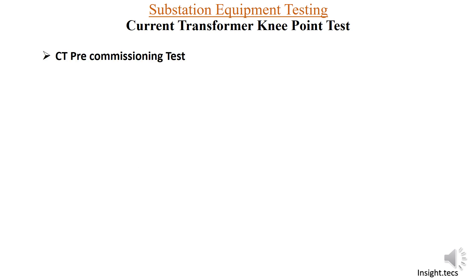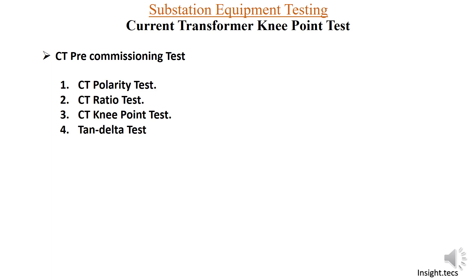There are various tests that are performed on the current transformer before commissioning of the CT is done. Some of these tests are: CT polarity test, ratio test, knee point test, tan delta test, and IR value test. In today's video we will be learning about the knee point test.